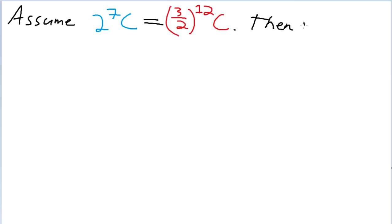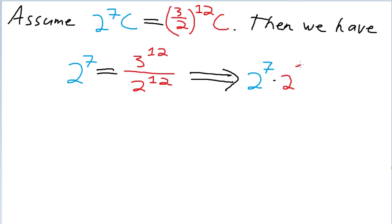Then, we can conclude that if we divide through by C and rearrange the fraction a little bit, we have 2 to the 7th being equal to 3 to the 12th divided by 2 to the 12th. And that, itself, would imply, if we multiply through by 2 to the 12th, that 2 to the 7th times 2 to the 12th would be equal to 3 to the 12th.